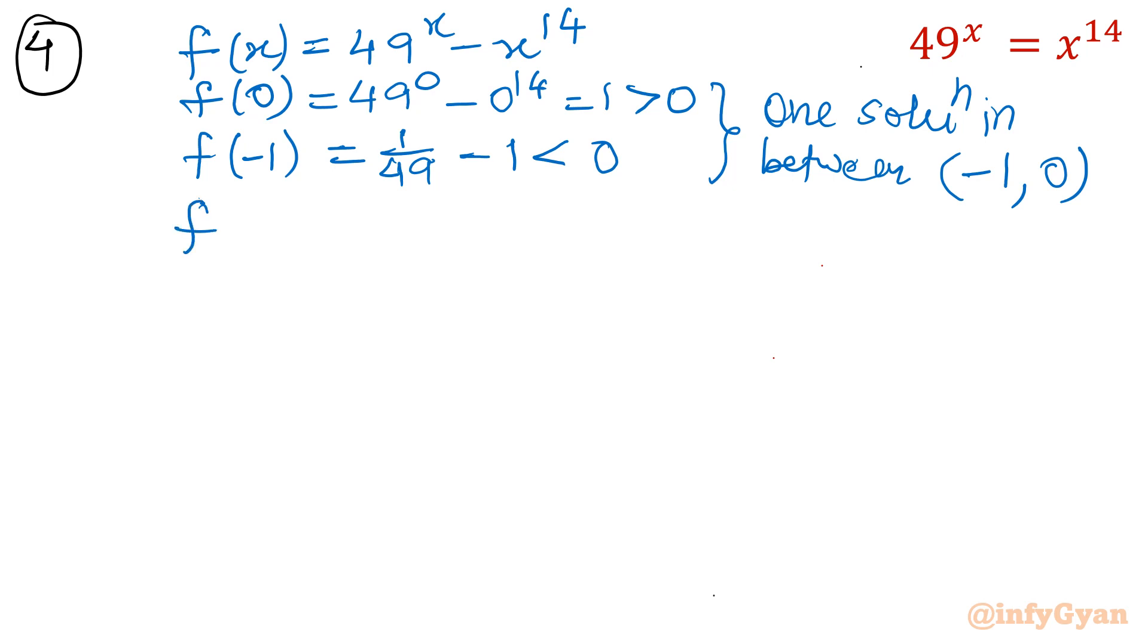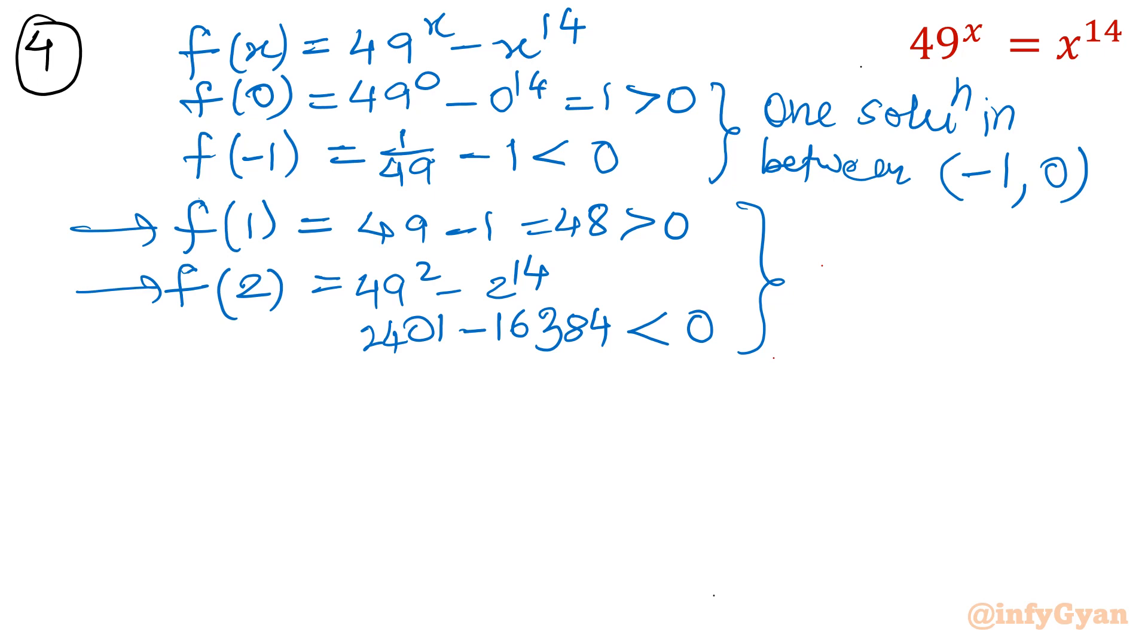Second point, see story is not complete. I am calculating f(1) also. f(1) then 49 minus 1 equals 48 which is positive. This part is more interesting. f(2) if you will check, then 49^2 minus 2^14. I have calculated 2401 and it is 16,384. Check it is negative. And then in between 1 and 2, because of sign change in between 1 and 2, we will have one more solution. So second solution in between 1 and 2.